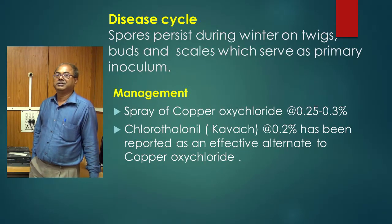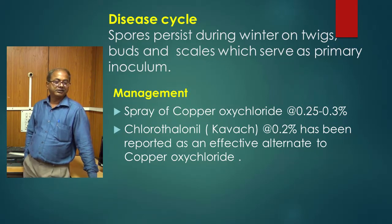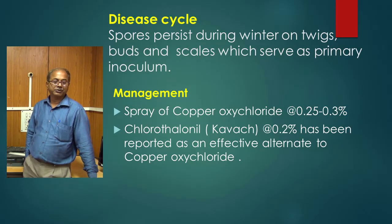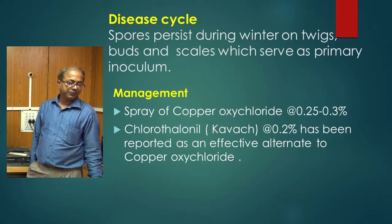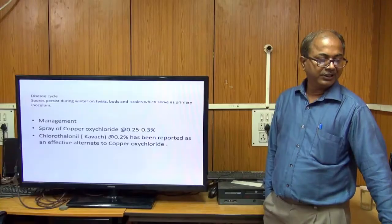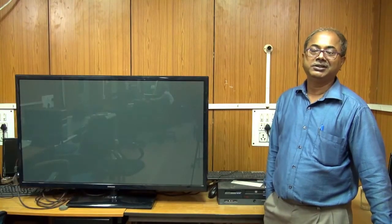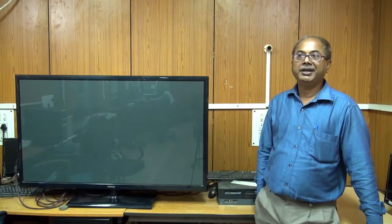Regarding the disease cycle, ascospores persist during winter on twigs, buds, and scales, which serve as the primary source of inoculum. You can manage the disease by spray of copper oxychloride at 0.25 to 0.3%. Another chemical, Chlorothalonil, sold as Kavach in the market, at 0.2% has been reported as an effective alternative to copper oxychloride. With this, the five diseases discussed today on wheat, lentil, turmeric, and peach are complete. We close the chapter. Thank you.